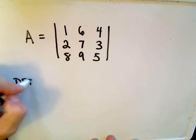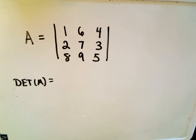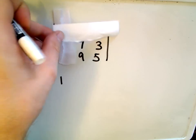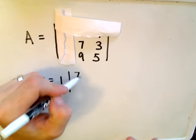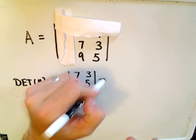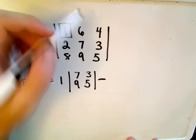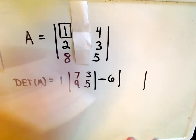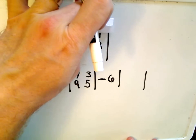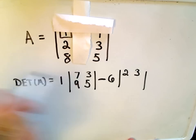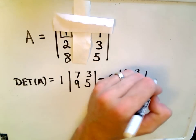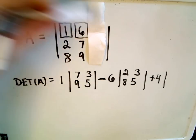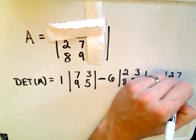The determinant of matrix A: we look at the first value, which is 1, and if I cover up that row and column, I compute the determinant of the smaller matrix 7, 3, 9, 5. Then we put a minus sign. The next entry is 6. If I cover up that column and row, I'm left with 2, 3, 8, and 5. Then I add the next value, which is 4. Covering up that column and row, I have 2, 7, 8, 9 left over.